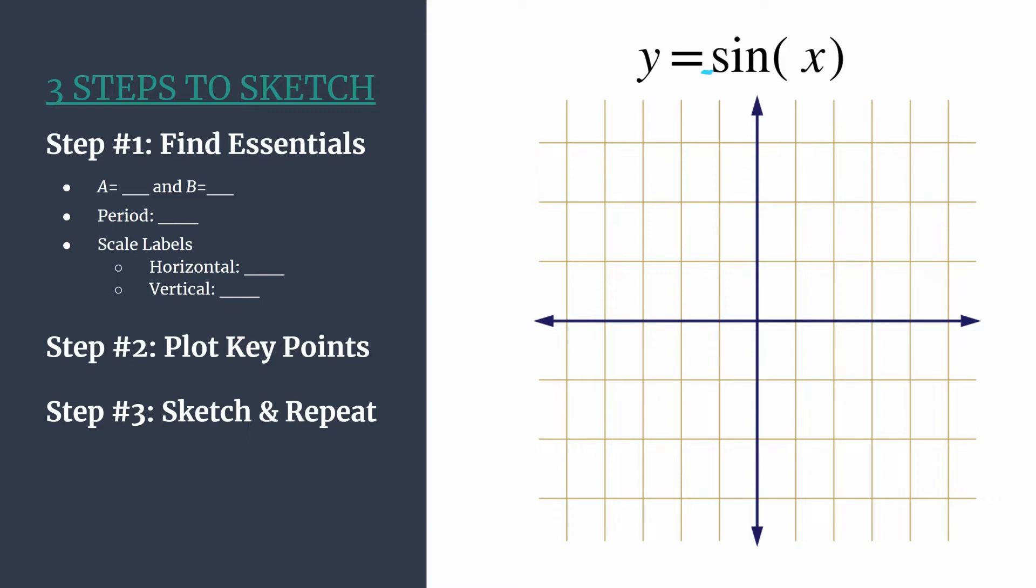So a is the coefficient in front of sine, it would be a vertical stretch or shrink. Since there's nothing there, we know it's an understood one, so there's really no vertical stretch or shrink here. B is the coefficient of x and in this case it's also an understood one.